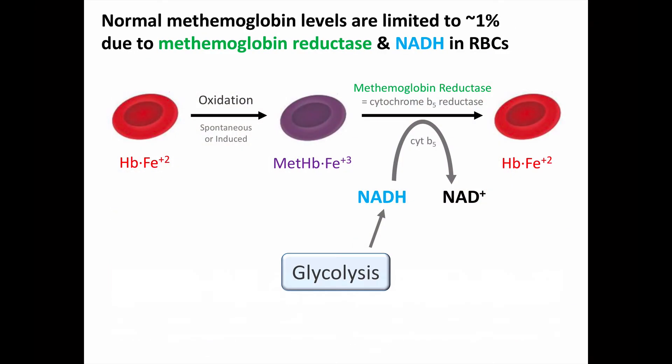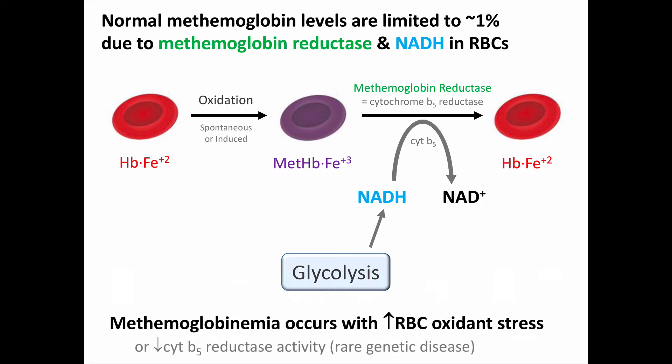Our hemoglobin is constantly being oxidized to methemoglobin, but this happens at a low enough rate that our bodies reduce it back, such that normal methemoglobin levels are limited to about 1%. The reduction of methemoglobin to normal hemoglobin is due to the enzyme methemoglobin reductase, also called cytochrome B5 reductase, in the red blood cells. Methemoglobin reductase uses NADH as a reducing agent, while cytochrome B5, a heme-containing molecule, helps shuttle electrons. In this redox reaction, NADH — produced from glycolysis in the RBCs — is oxidized to NAD+.